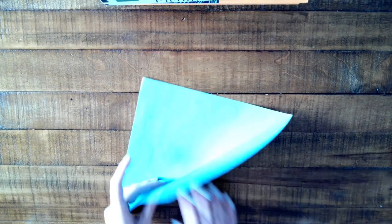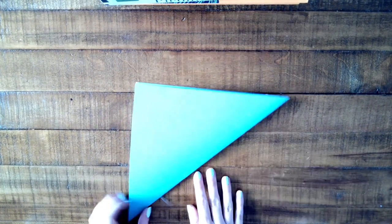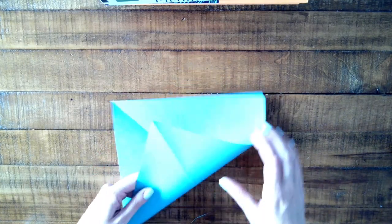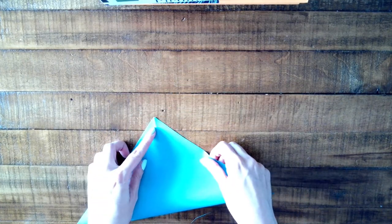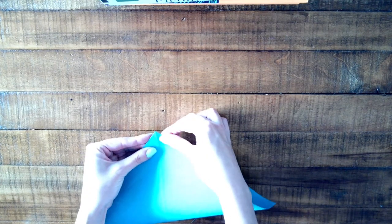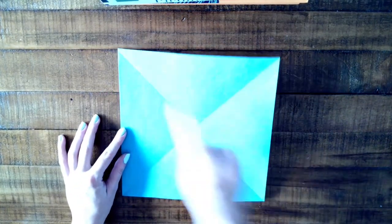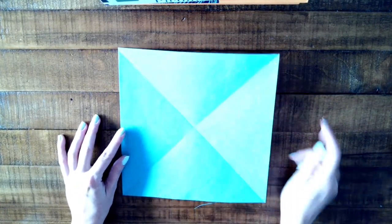Take your now square sheet of paper and fold it in half diagonally along the creased line. Open it and fold it in half diagonally again in the other direction. When you open it, you should have an X across the middle of your square paper.